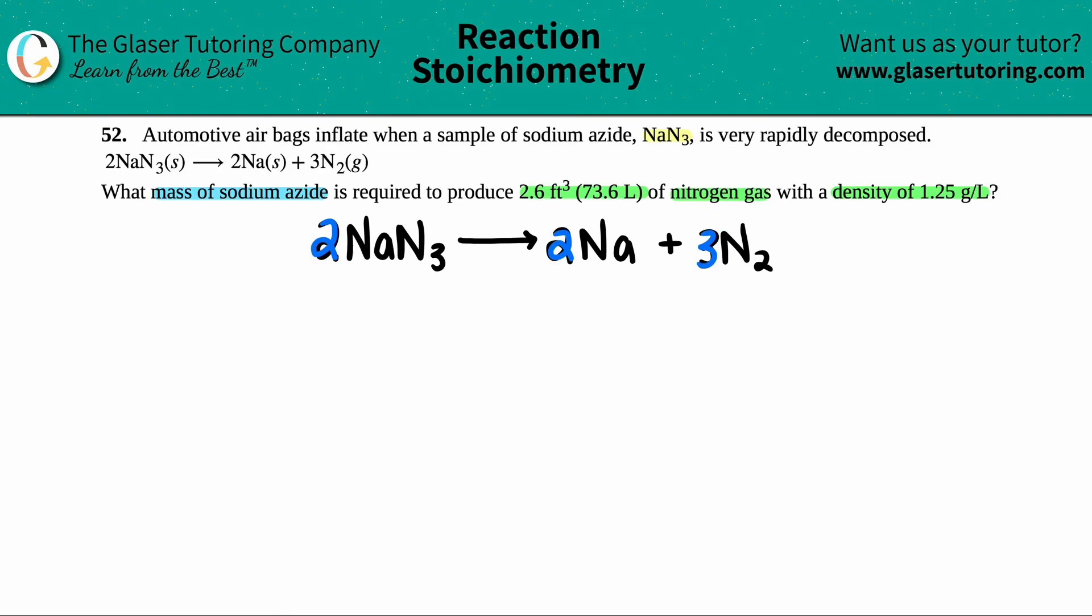So what I like to do is I like to keep everything nice and neat and write out what we started with and what we're trying to solve underneath my balanced equation. Now we're looking for a mass of sodium azide, and they did tell us that sodium azide was NaN3. So I'm going to write down that this is what I'm solving for. Remember, mass is grams.